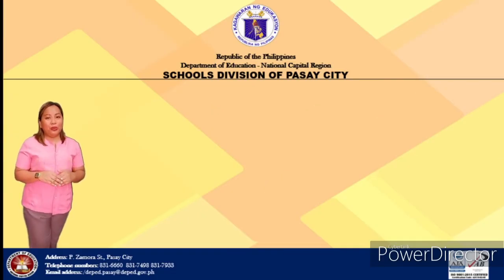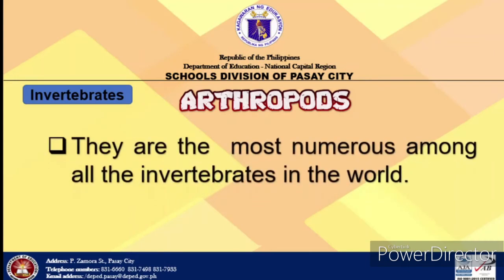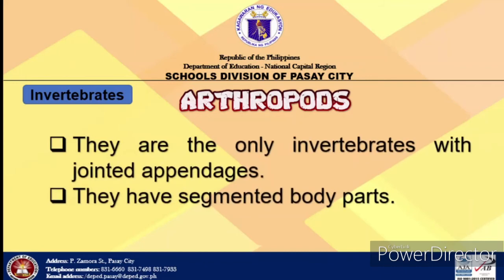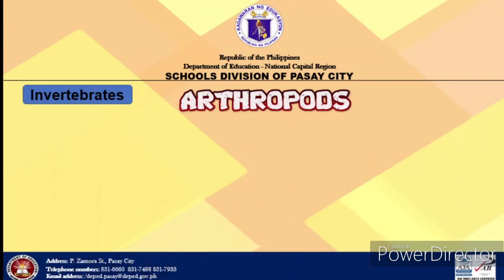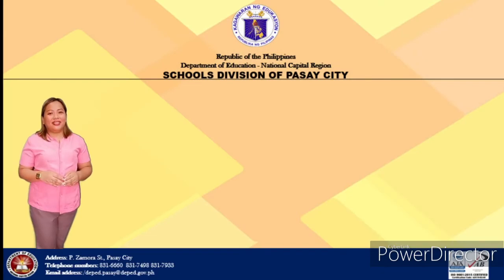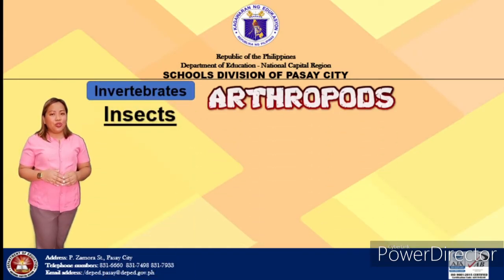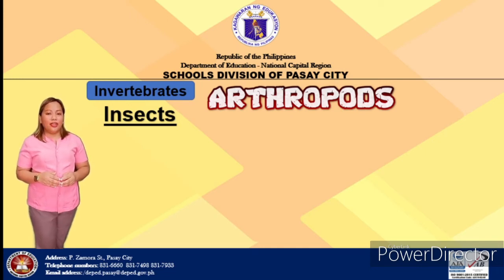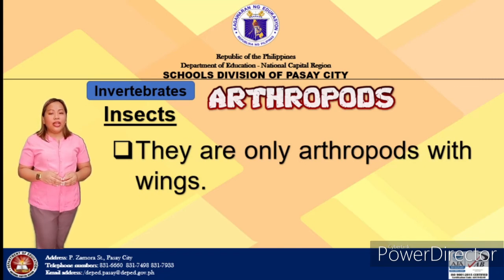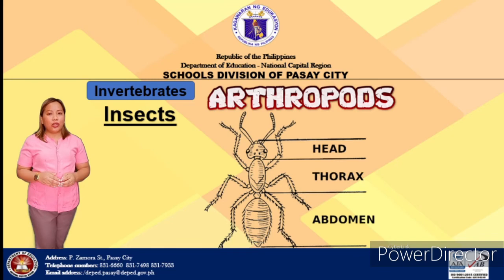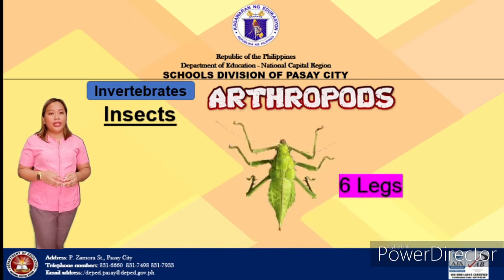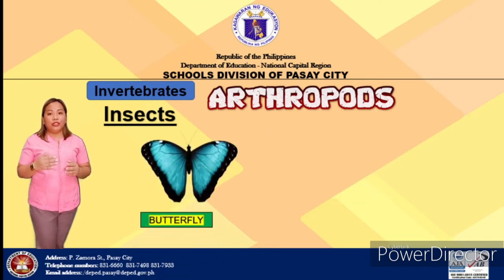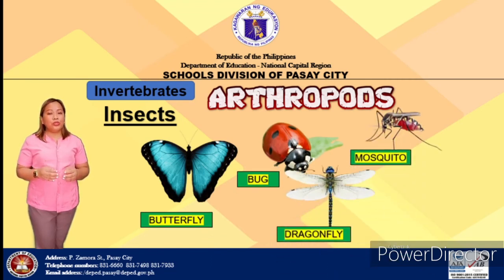Let's talk about arthropods. Arthropods are the most numerous among all the invertebrates in the world. They are the only invertebrates with jointed appendages. They have segmented body parts: the head, thorax, and abdomen. The first class is insects. Insects are the only arthropods with wings. They have segmented bodies covered with an exoskeleton and divided into three body regions: head, thorax, and abdomen. They have three pairs of jointed legs, meaning they have six legs. All insects reproduce sexually. Examples are butterfly, bug, dragonfly, mosquito, and housefly.